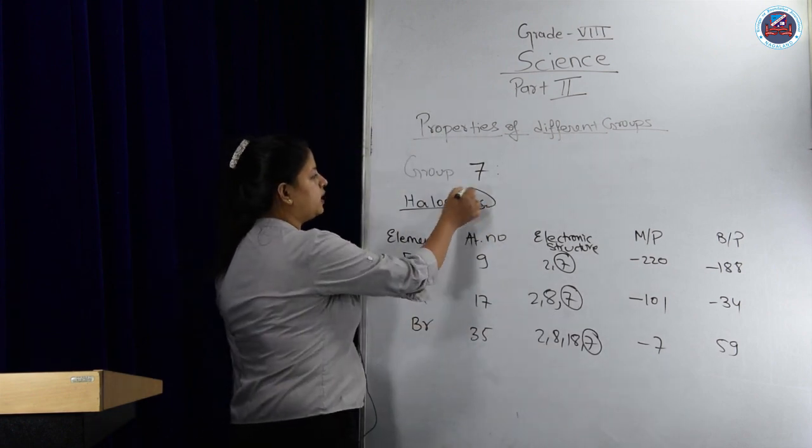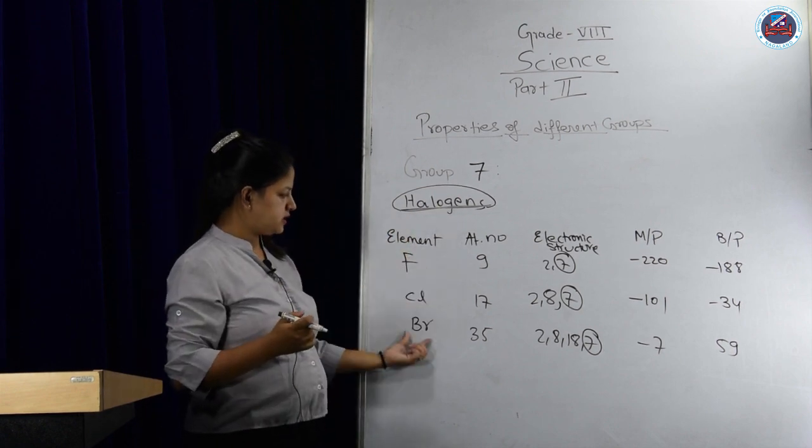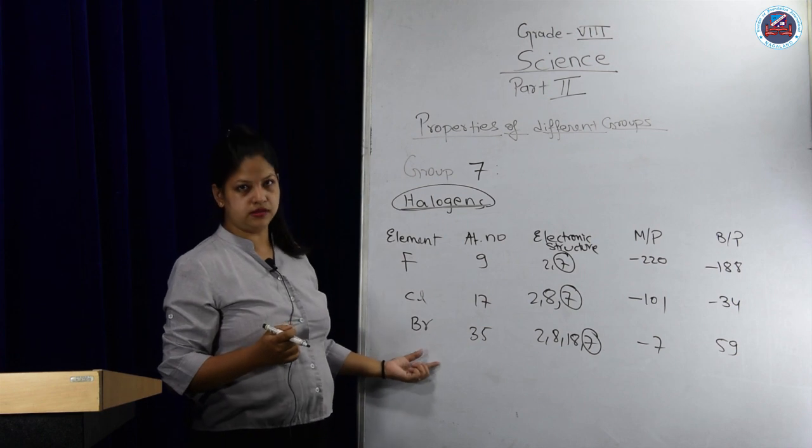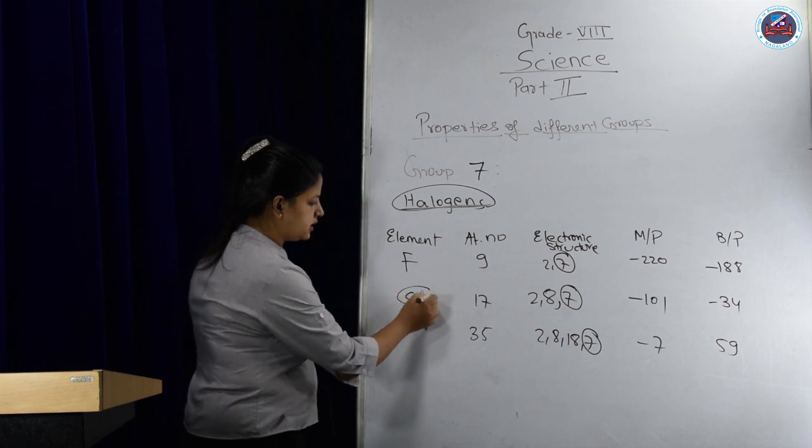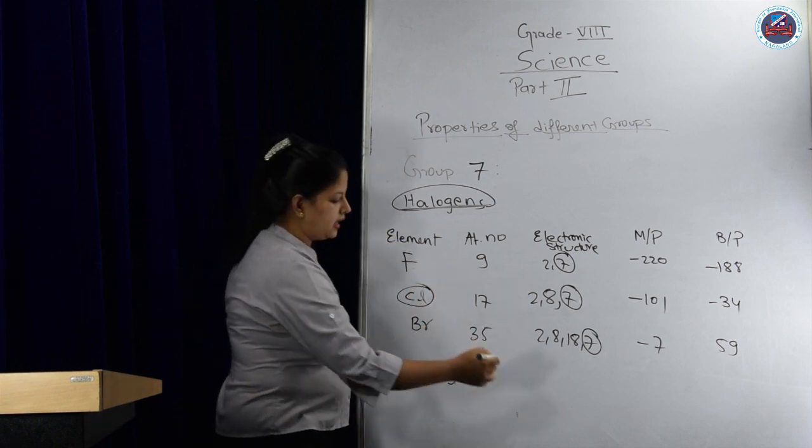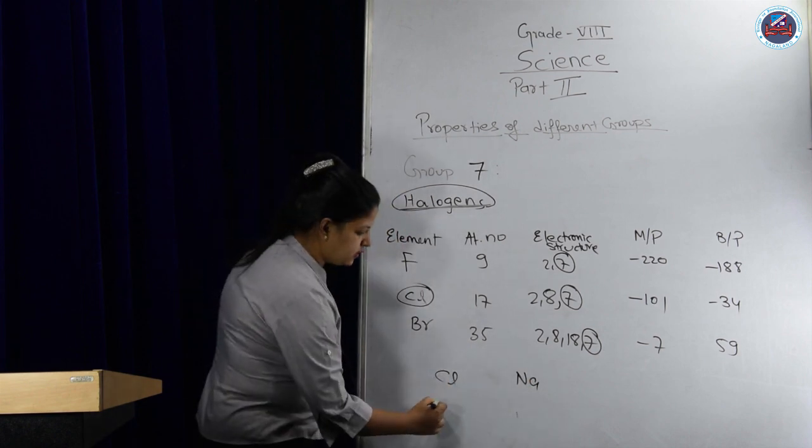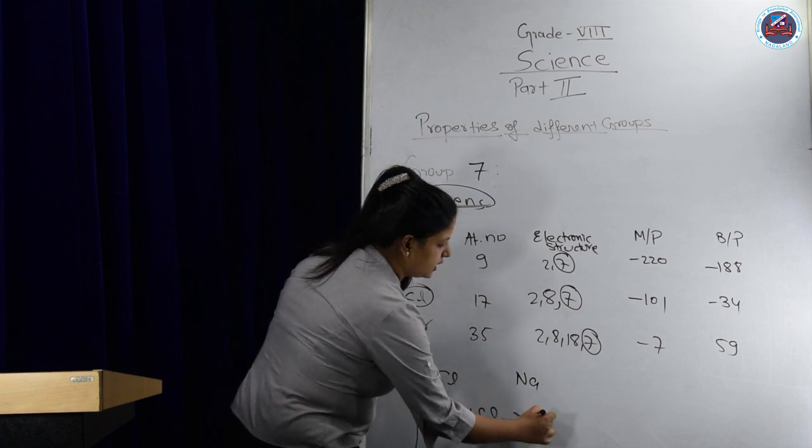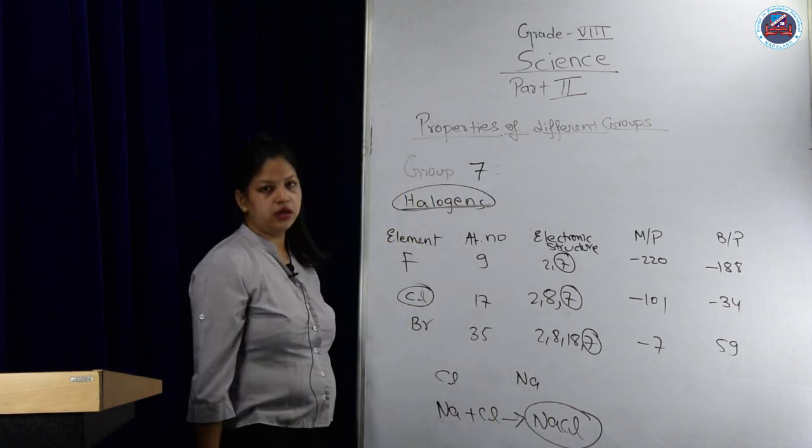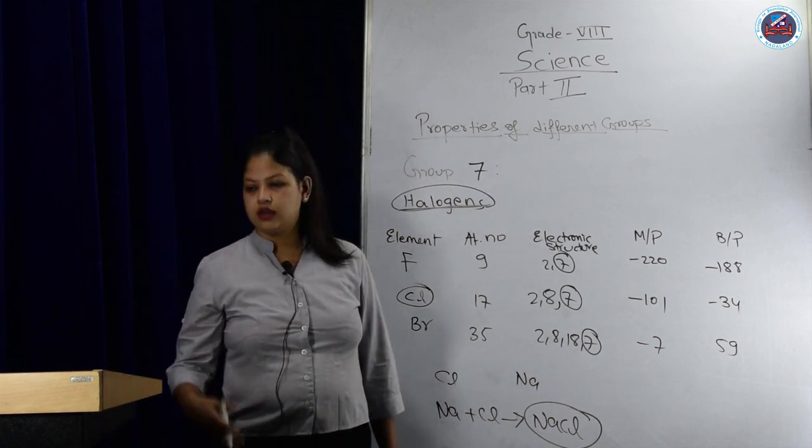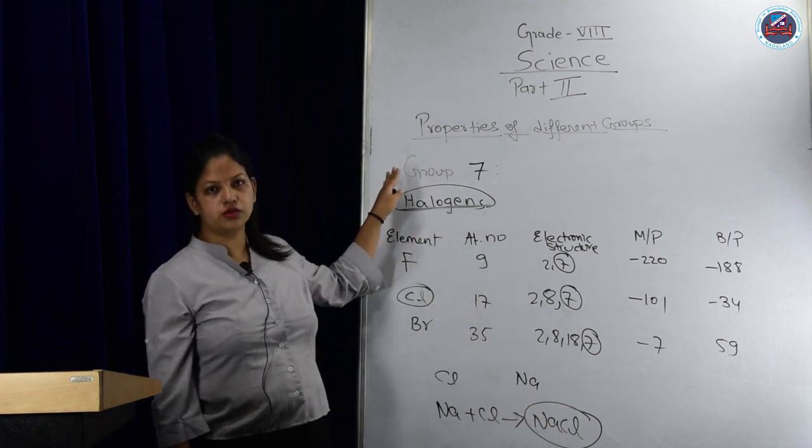Why do we call them halogens? These elements, if they react with metals, give salt. For example, Cl is chlorine, a halogen, and Na is a group 1 element, a metal. If you react Na and Cl, you get NaCl, which is a salt without charge. Since it forms salt, we call them halogens.